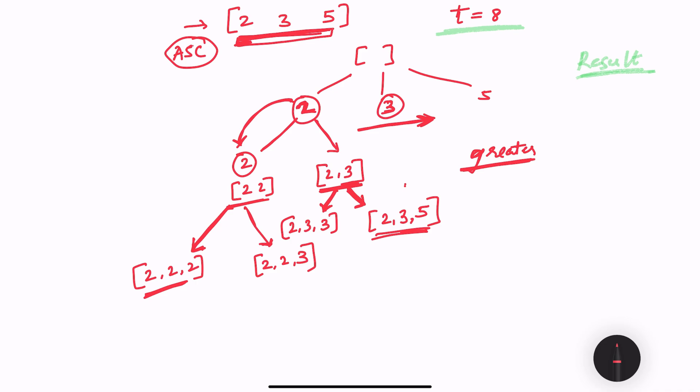because it is given in the problem statement that all numbers are unique or distinct. Hence we will not be having the same number again, and in the other case, we are doing an ascending on our candidates array.